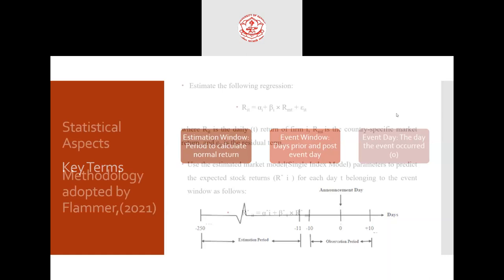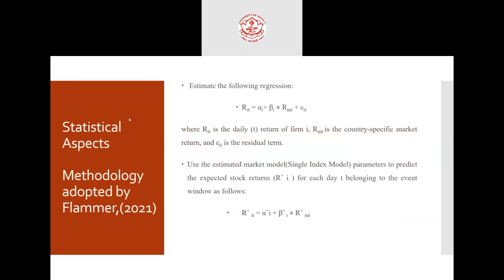Now I'll explain the alpha and beta. In a paper by Flammer in 2021, he checked whether green bonds create abnormal returns using this methodology. Regression is used to find the relationship between two variables — one independent and one dependent. In this methodology, the independent variable is the market return, and we use Nifty as the market return. The dependent variable is the firm return.